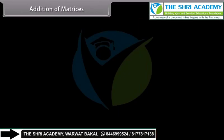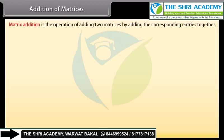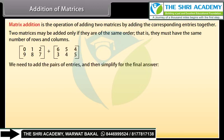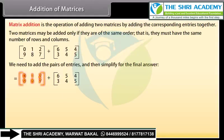Addition of matrices. Matrix addition is the operation of adding two matrices by adding the corresponding entries together. Two matrices may be added only if they are of the same order, that is, they must have the same number of rows and columns. Let's add these matrices. We need to add the pairs of entries and then simplify for the final answer. The first matrix is [0, 1, 2; 9, 8, 7] and the second matrix is...